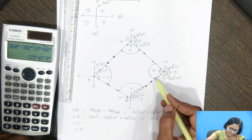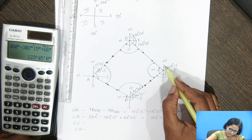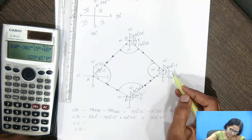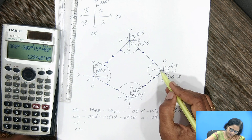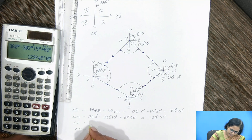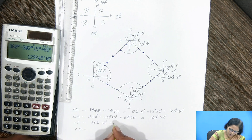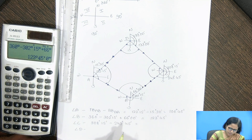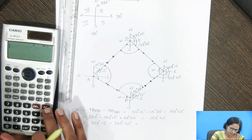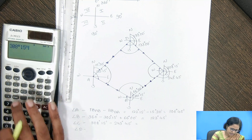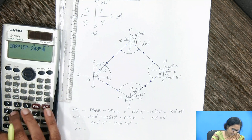For angle C, the back bearing is 243 degrees 45 minutes and the fore bearing is 308 degrees 15 minutes. Subtracting the back bearing from the fore bearing: 308 degrees 15 minutes minus 243 degrees 45 minutes. From the available data, you can find individual angles — this works out to be 64 degrees 30 minutes.